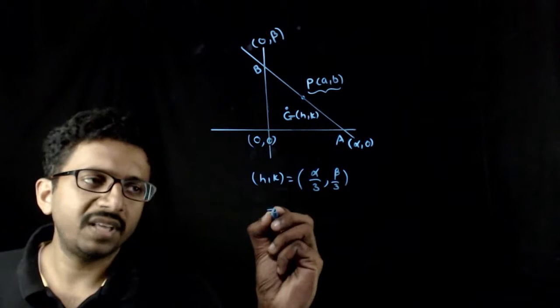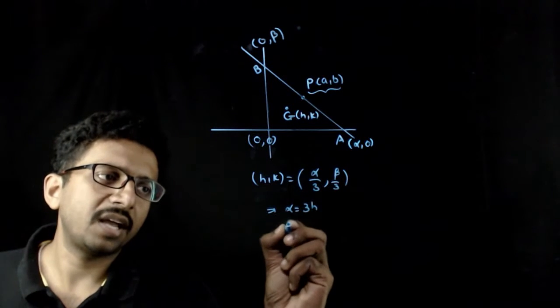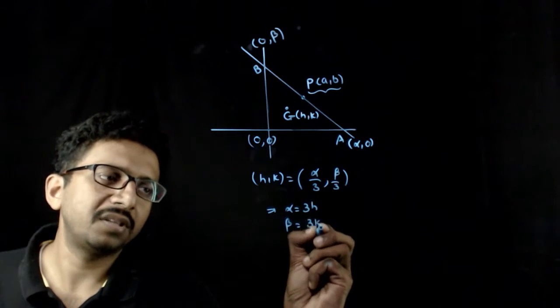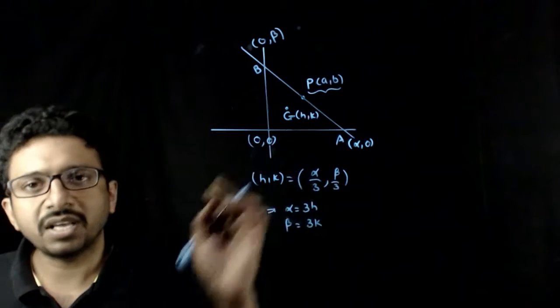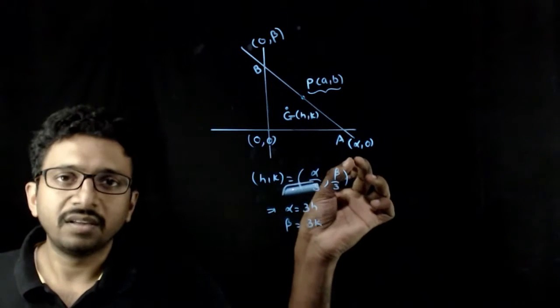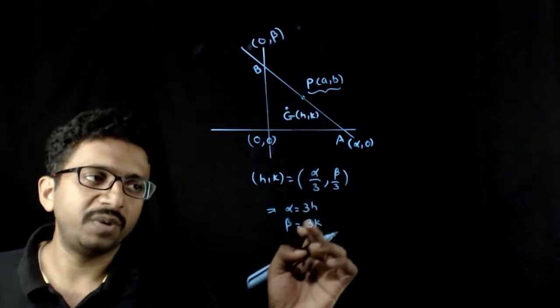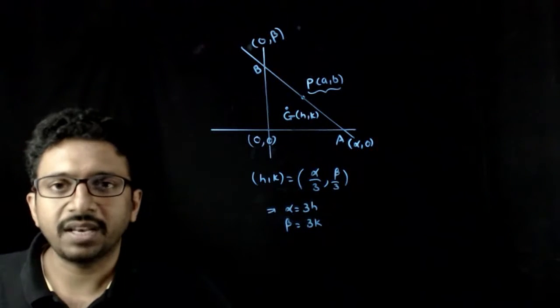From this alpha should be equal to 3H and beta should be equal to 3K. That is if H comma K is the centroid of this triangle, the x intercept of this line has to be 3H, the y intercept of this line has to be 3K.